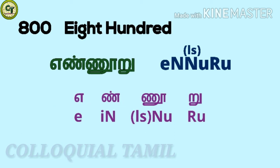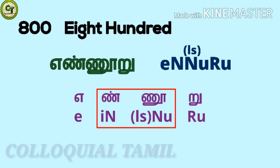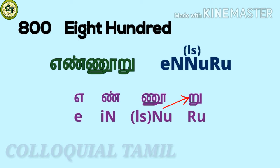For 800: en noo ru. A short sound vowel, in is a consonant, nu is a long sound letter. Both the in and nu belong to the group of big naa letters. While pronouncing it, your tip of the tongue touches the middle roof of your mouth. Then ru — this ru belongs to the group of big raa letters. You say it with the highest stress, distinct from those that belong to the group of small raa letters. Together: en noo ru.